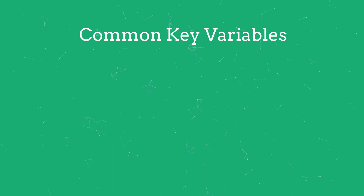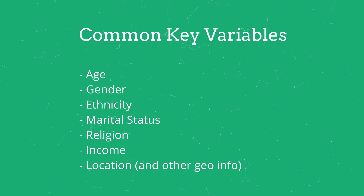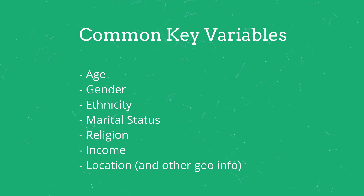While there is no defined set of key variables, common key variables in humanitarian contexts include age, gender, ethnicity, marital status, religion, income, location, and other forms of geographic information. Of course, there will likely be other key variables unique to your context and dataset. This is why the more you know about your data and the context you're operating in, the better placed you are to select key variables.